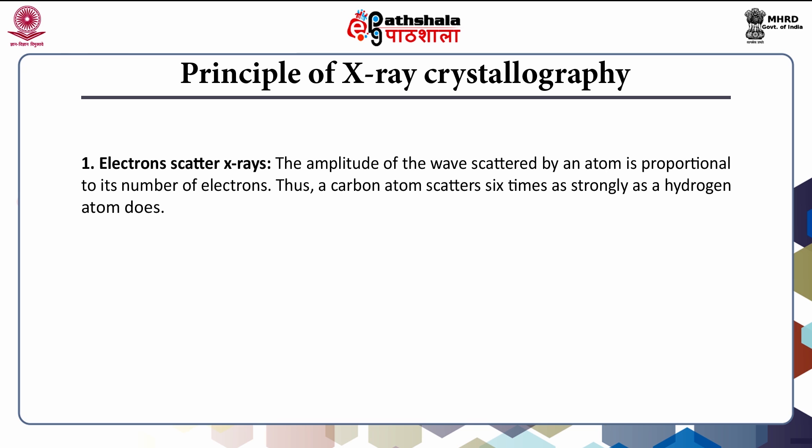For example, a carbon atom contains six electrons and a hydrogen atom contains only one electron. The amplitude of the wave produced from hydrogen is less compared to the amplitude produced from carbon which contains six electrons. So the amplitude of the wave scattered by an atom is proportional to its number of electrons.